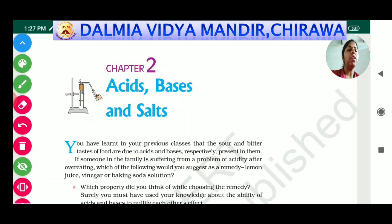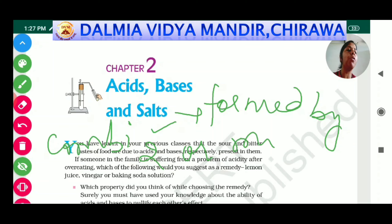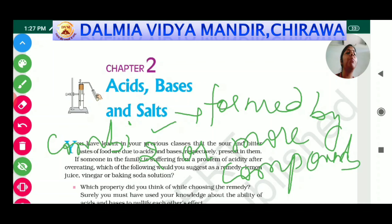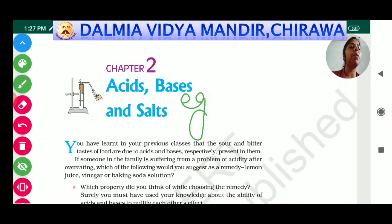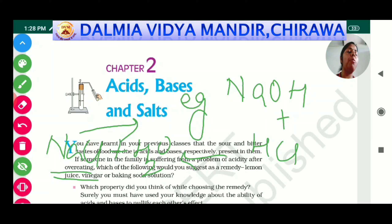Now there is one more word in this chapter: salts. What are salts? Salts are formed by the combination of two or more compounds. When two or more compounds react together, the substance formed is known as a salt. For example, when you mix NaOH with HCl, you get NaCl plus water, and this NaCl is known as salt.